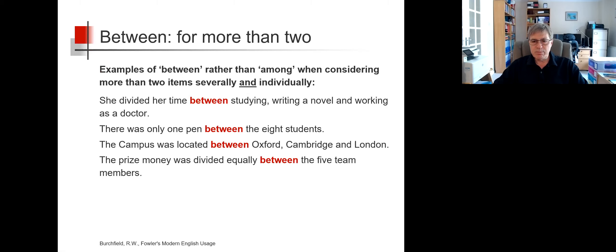The campus was located between Oxford, Cambridge and London. Here we're interested in all three locations. And finally, the prize money was divided equally between the five team members. Here we're interested in each team member receiving money.